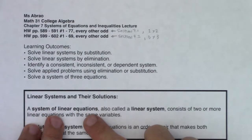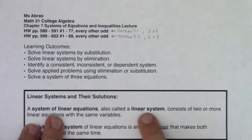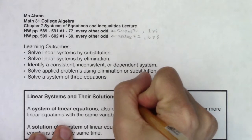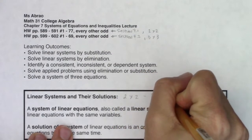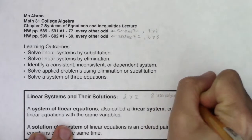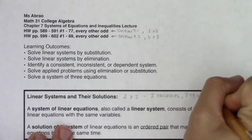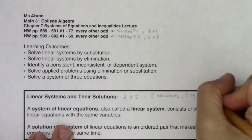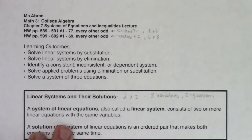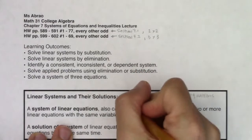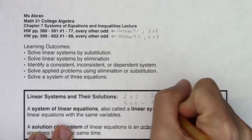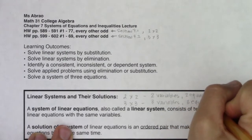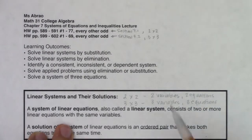For linear systems and their solutions: a system of linear equations, also called a linear system, consists of two or more linear equations with the same variables. When I say two by two, that means we have two variables and two equations. Those are the problems you'll see in section 7.1, and they're likely familiar to you. Three by threes are problems that have three variables and three equations that accompany them.